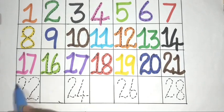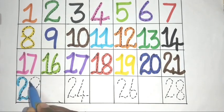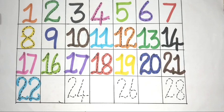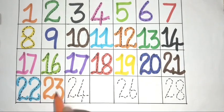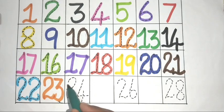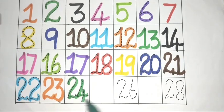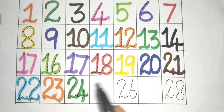Two, two, twenty-two. Two, three, twenty-three. Two, four, twenty-four.